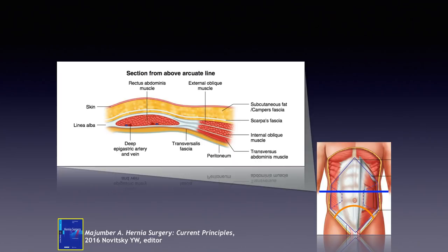Deeper, after the internal oblique, you have the transversus abdominis muscle, which contributes muscular fibrous portions to the posterior rectus sheath in the upper third of the abdomen. As you progress down towards the pubis and continue taking the cross-section, you'll see the muscular portions migrate laterally, and the only structure the transversus abdominis contributes to the posterior rectus sheath is the transversus abdominis aponeurosis.